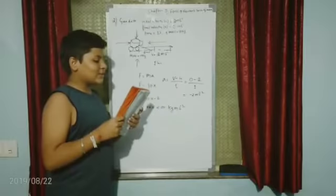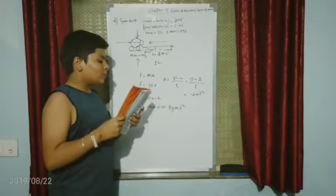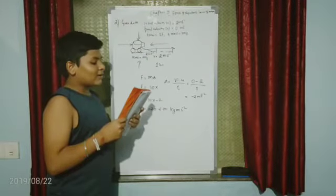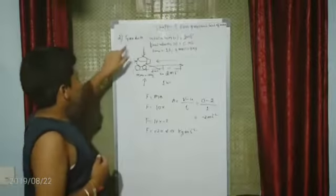A mass of 10 kg is moving with an initial velocity of 2 m per second. To make it come to rest in 1 second, what should be the unbalanced force? Let us solve this problem using the given data.